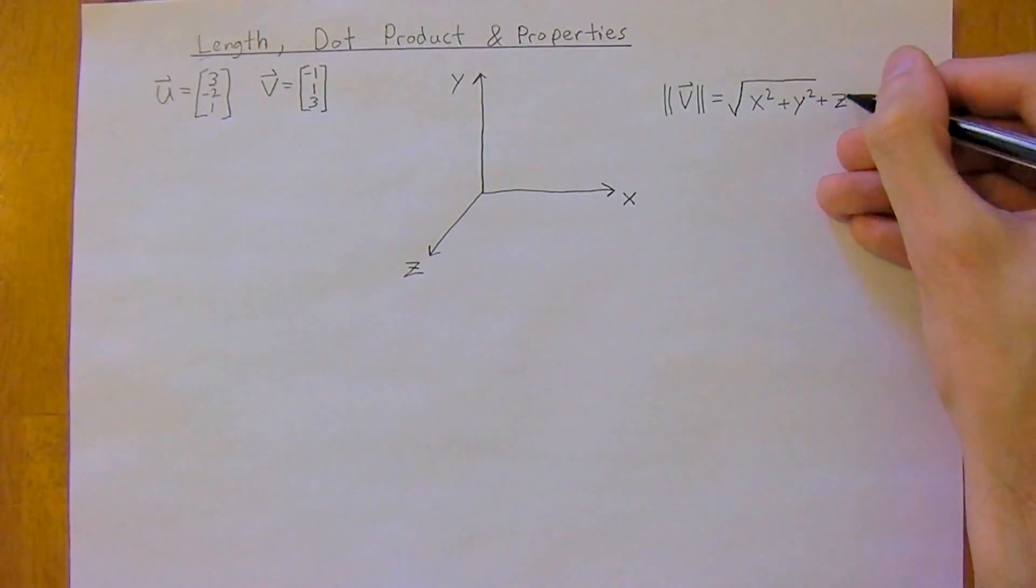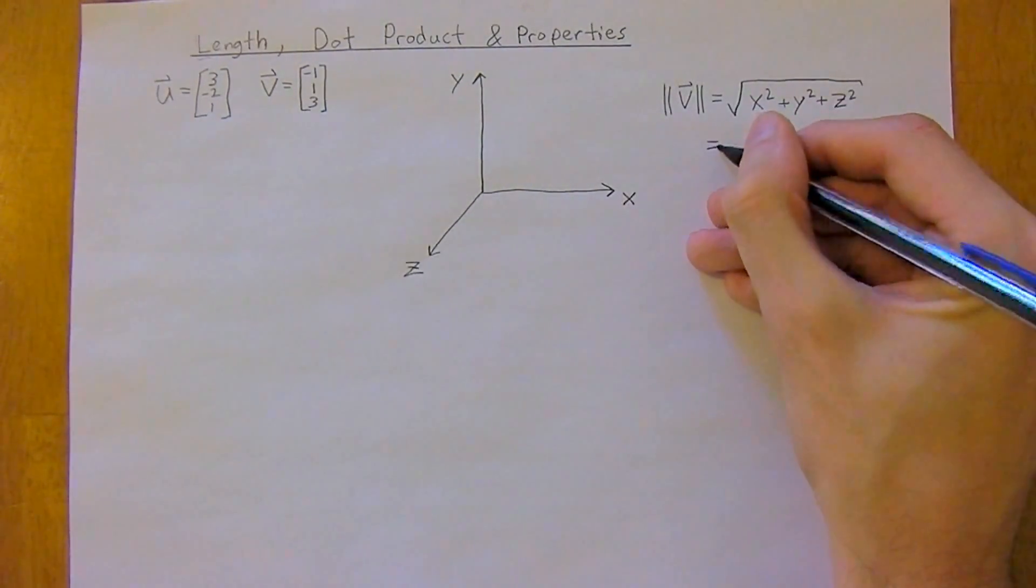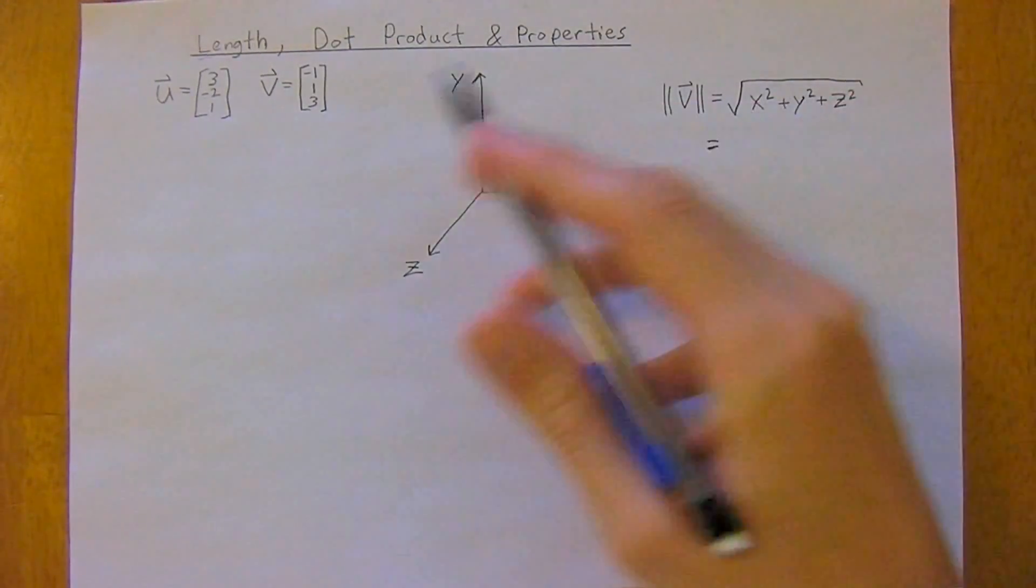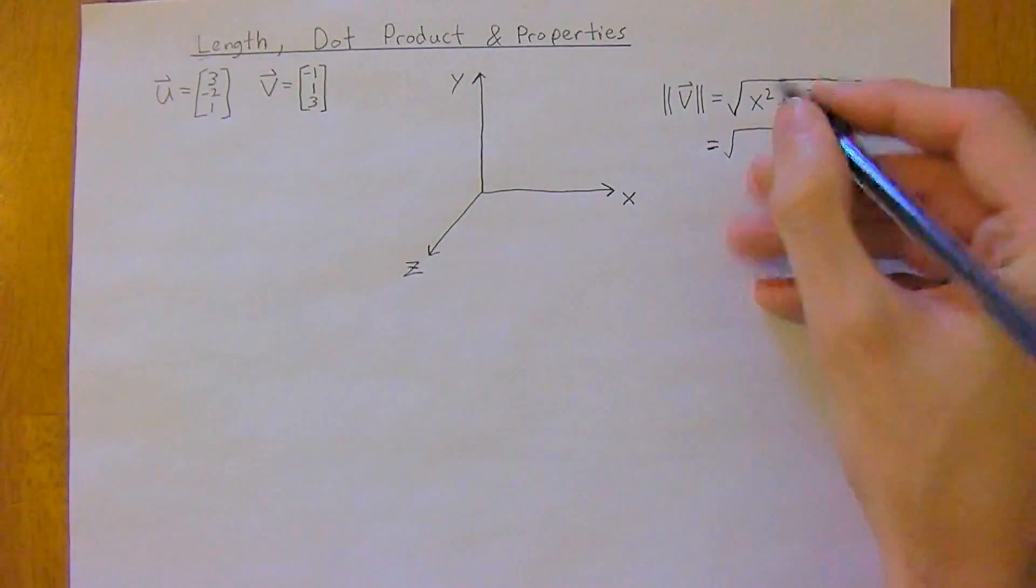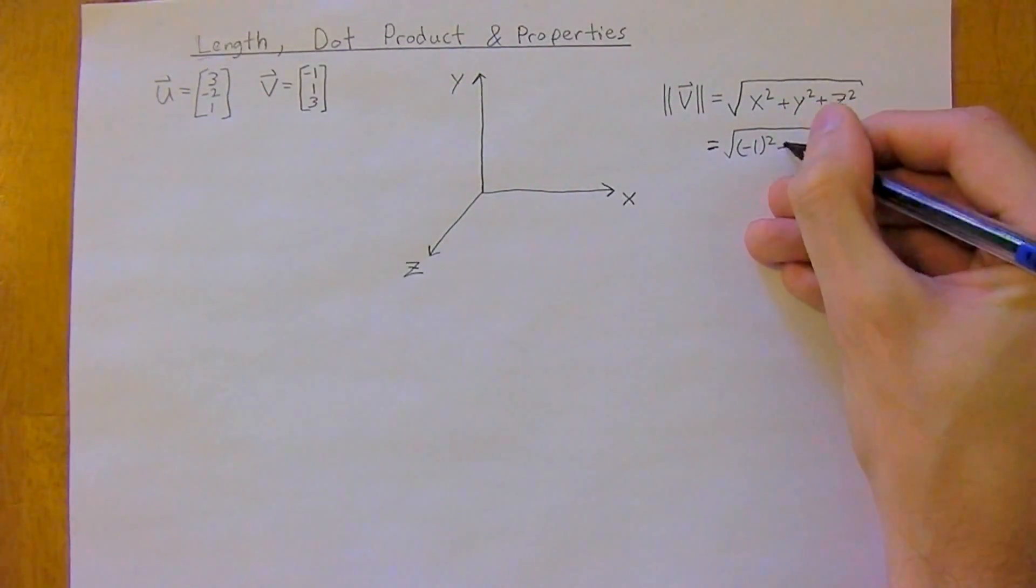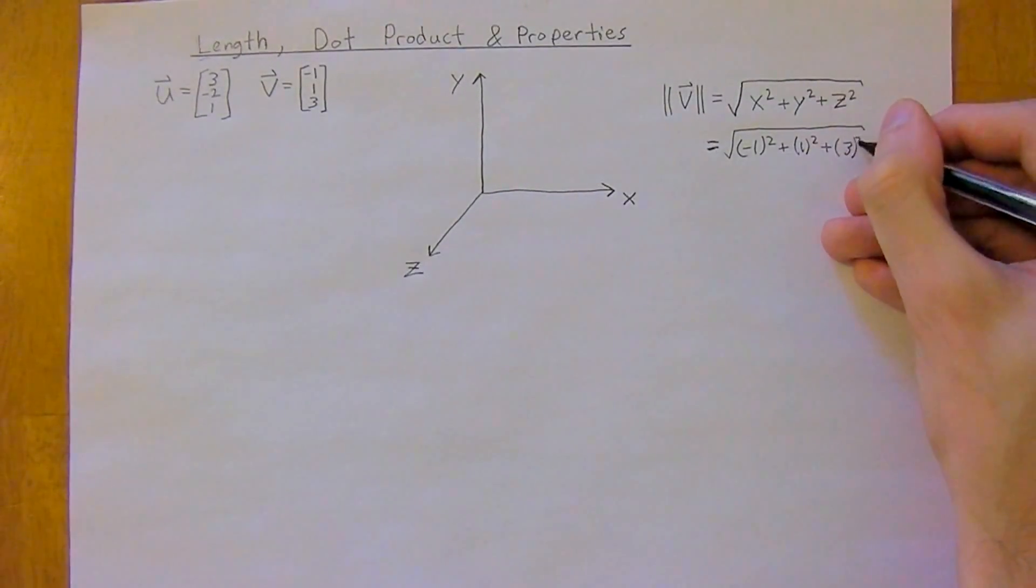plus the z component squared. So the magnitude, or the length of v, will be equal to negative 1 squared, plus 1 squared, plus 3 squared,